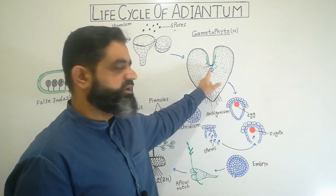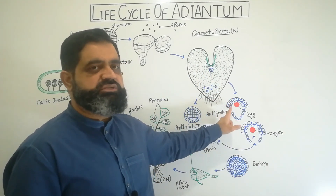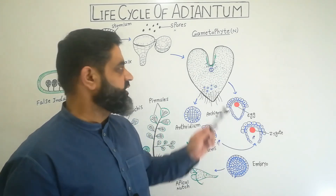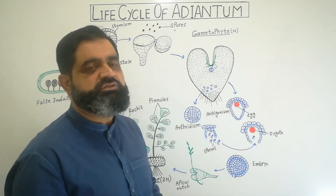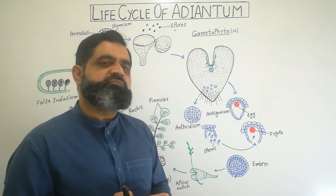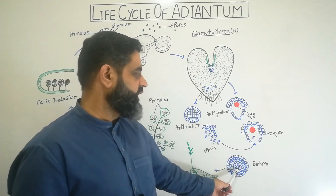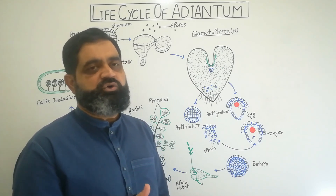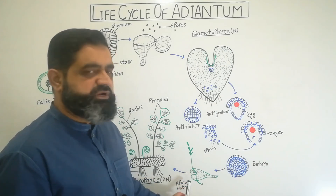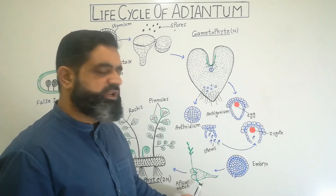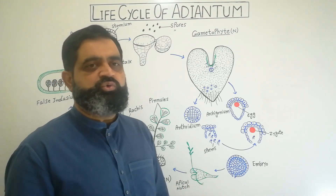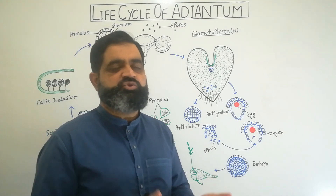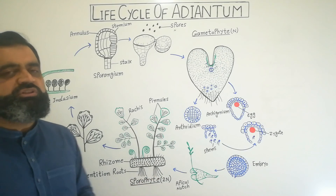The egg releases chemicals and, with the help of chemotaxis, sperms move towards the egg. After reaching the archegonium, they fertilize the egg. After fertilization, the egg is converted into a zygote, which is a diploid structure formed by the fusion of sperm and egg — all taking place in the archegonium near the notch of the prothallus. The zygote then changes into an embryo, which divides mitotically into a new sporophytic generation. A leaf-like structure and a root-like structure appear, and the prothallus begins to degenerate.